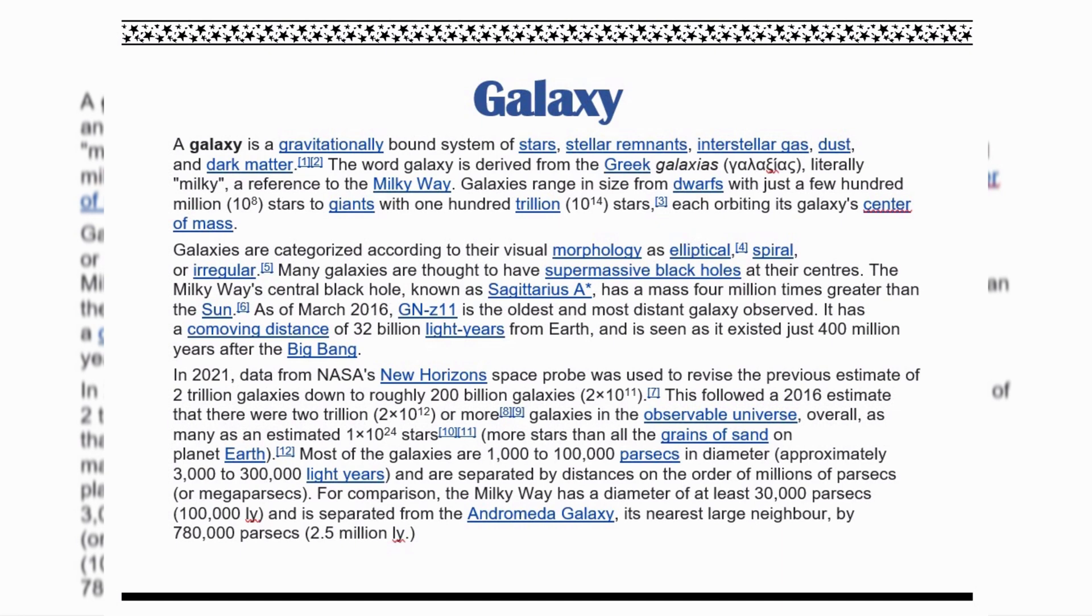Galaxies are categorized according to their visual morphology as elliptical, spiral, or irregular. Many galaxies are thought to have supermassive black holes at their centers. The Milky Way's central black hole, known as Sagittarius A, has a mass 4 million times greater than the sun.